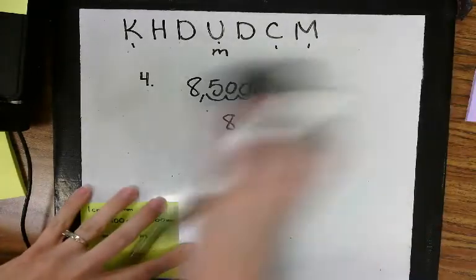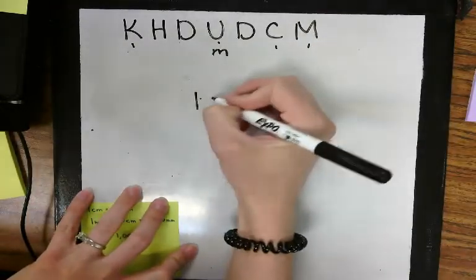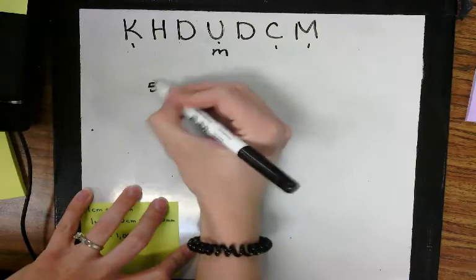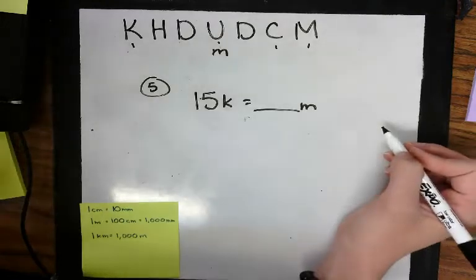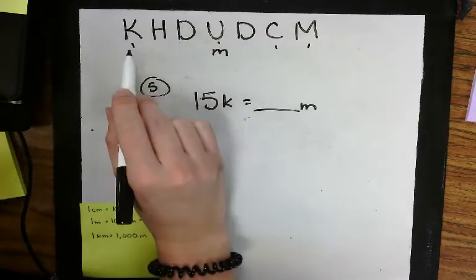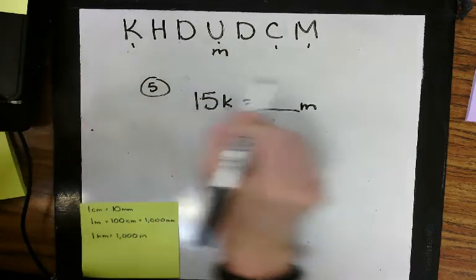Let's look at one that goes the other way. This is number 5. 15 kilometers is how many meters? I'm starting at kilometers, moving to meters, so my decimal point is going to move that way.